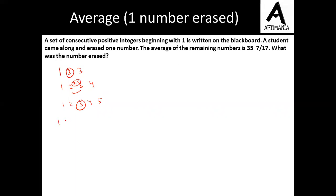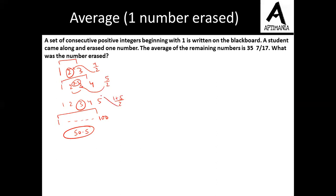Suppose if I am taking the numbers from 1 to 100, the average will be 50.5. We can simply do it by adding 1 and 100 and dividing by 2. So 1 plus 3 divided by 2 gives the average; 1 plus 5, that is 6 divided by 2, gives the average. Basically whenever we have a set of consecutive numbers, we add the first and last number and divide by 2 to find the average.